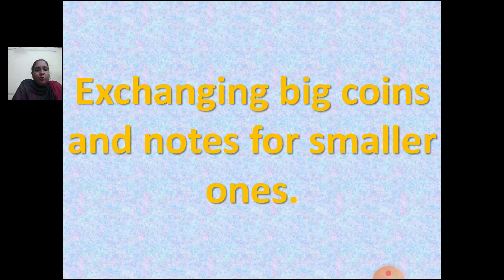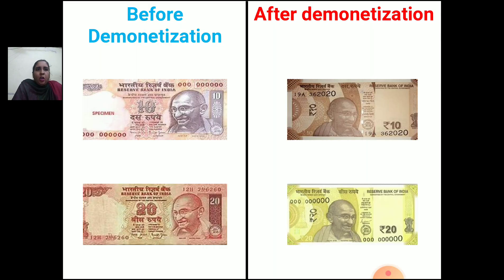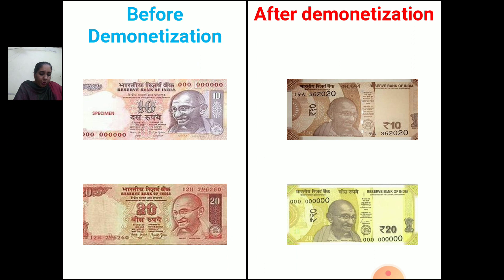In this chapter we are going to learn about exchanging big coins and notes for smaller ones. Before I proceed, let me show you the new notes and the old notes — that is, before demonetization and after demonetization. Demonetization means that the Reserve Bank of India has withdrawn the old 500 and 1000 rupee notes as an official mode of payment. This was done to tackle black money in the economy, or to stop corruption in the country.